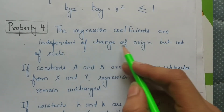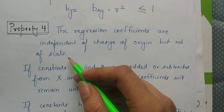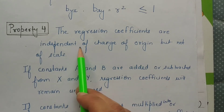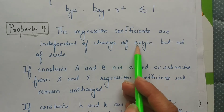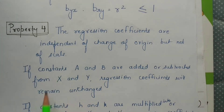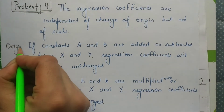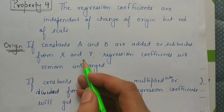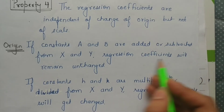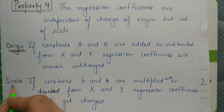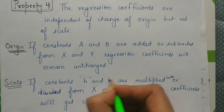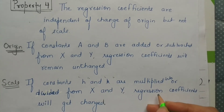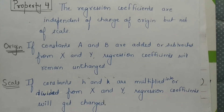Property 4: Regression coefficients are independent of change of origin but not of scale. This property appears in many chapters — it came up in Karl Pearson's chapter and in measures of dispersion as well. Change of origin means adding or subtracting a constant A or B to X and Y variables; this does not affect the regression coefficients. However, change of scale — meaning multiplying or dividing X and Y by a constant — will change the regression coefficients.